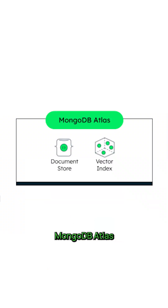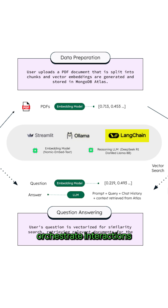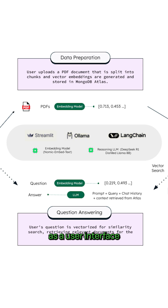This setup includes MongoDB Atlas for content storage and vector search, Ollama to run DeepSeek and Nomic models locally, LangChain to orchestrate interactions, and Streamlit as a user interface.